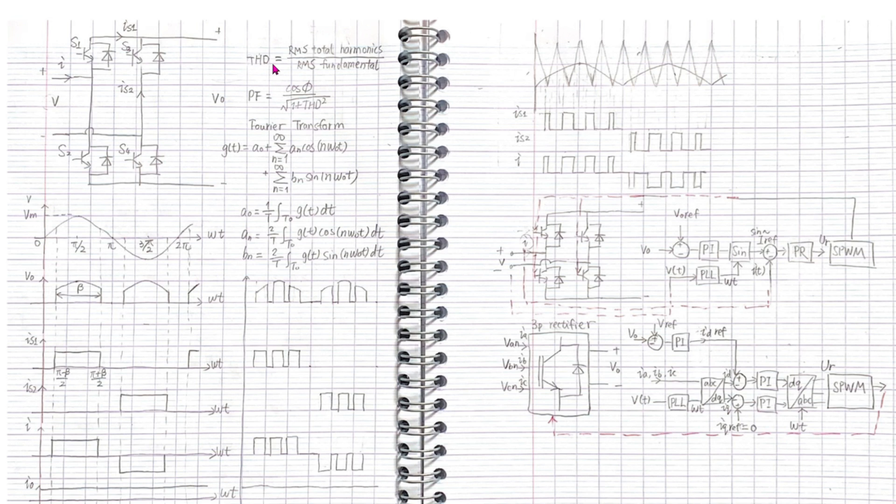The total harmonic distortion is defined as the RMS of total harmonics over the RMS of fundamental wave. And if we want to get the harmonics, we need to do the Fourier transform to the waveform. The Fourier transform represents a periodic signal by the combination of sine and cosine with the coefficient a_n and b_n.